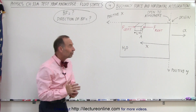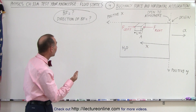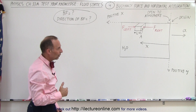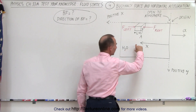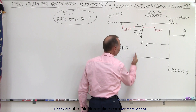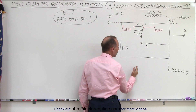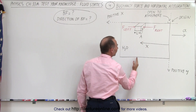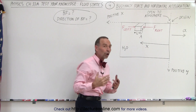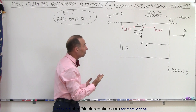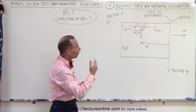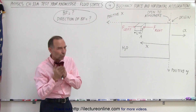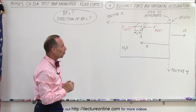How do we find the buoyancy force, and what is its direction? If we have an object below the surface, the force at the bottom is greater than at the top, so the buoyancy force acts in the direction of the larger force. In this case, we need to determine whether the force on the right side or the force on the left side is greater — whichever is greater gives the direction of the buoyancy force.